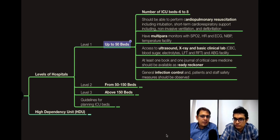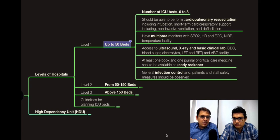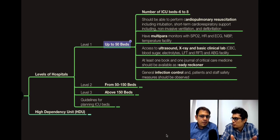The lab should cover blood sugar, electrolytes, LFT, RFT, and ABG facility. You should also have at least one reference book and one journal of critical care medicine to stay updated. General infection control practices are required — staff should be trained in infection control, as it is a major cause of patients becoming sicker. These things are also checked and required in NABH accreditation.